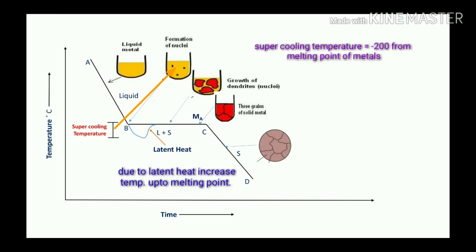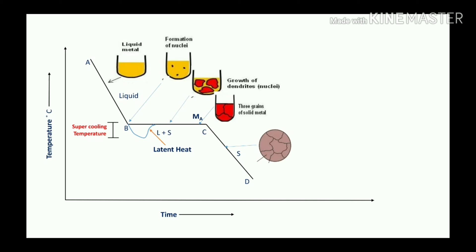Due to the latent heat present in the remaining atoms, the temperature once again increases up to the melting point of metal A. As you can see from the diagram, at point B the supercooling temperature reduces the temperature near to point B, which helps in generating — that is, starting — the formation of nuclei.